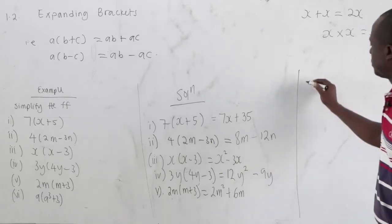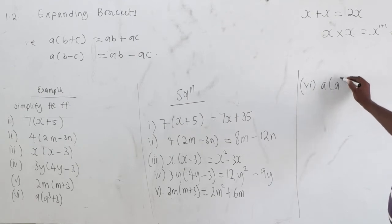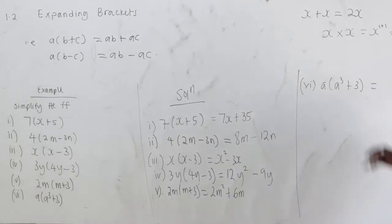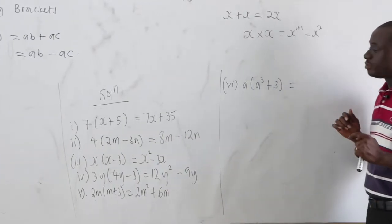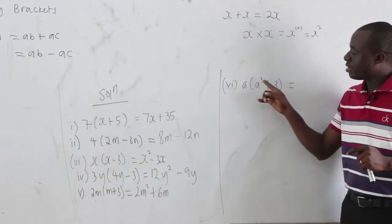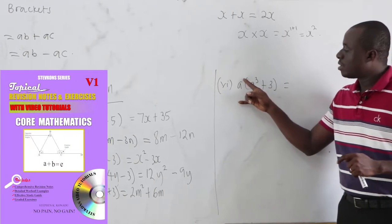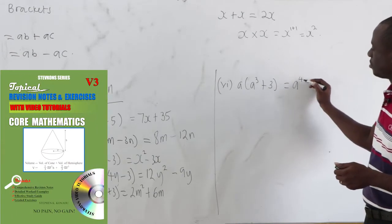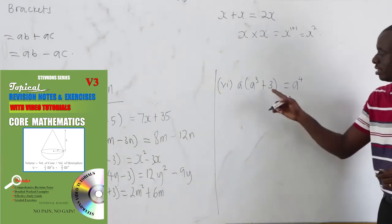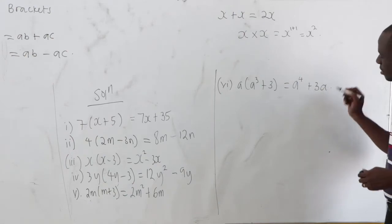Sixth: a times a cubed plus 3. Applying the distributive law: a times a cubed — because we are multiplying and the base is the same, we add exponents: 1 plus 3 equals 4, giving a to the power 4. Then a times 3 gives plus 3a.